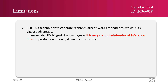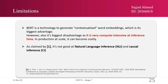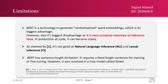In terms of the limitations of the BERT model, BERT generates contextualized word embeddings, which is both its biggest advantage and disadvantage — it is a very computationally intensive task at inference time, and therefore in production at scale it can become costly. As claimed by the paper, it is not ideal for natural language inference and causal inference. A third limitation is that BERT has a sentence length limitation, requiring fixed-length sentences for training and fine-tuning; however, this was resolved in a newer model called XLNet.